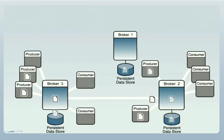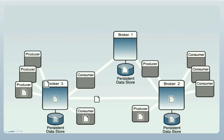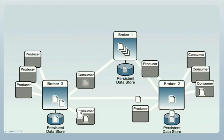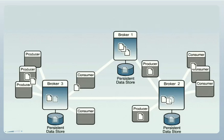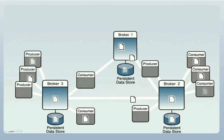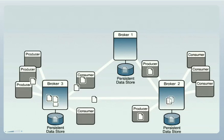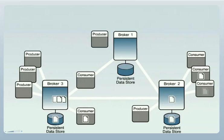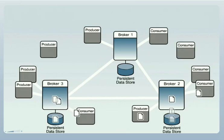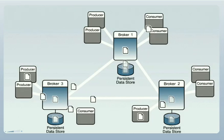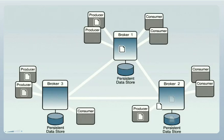When a failed broker restarts, it reconnects to the cluster and retrieves the undelivered and unconsumed messages from its persistent data store. The broker resumes message delivery, delivering messages even to consumers that have reconnected to other brokers in the cluster. No messages are lost or failed to be delivered. As consumers and producers are subsequently shut down and restarted, they will reconnect to the original broker, rebalancing the system.